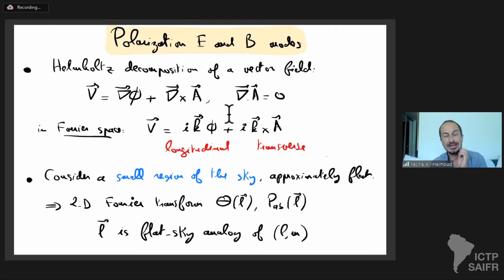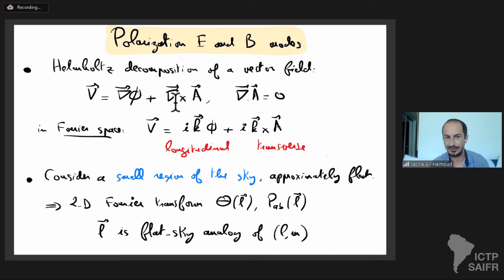I want to briefly talk about E and B modes — and beware that E here no longer means electric field. If you have a three-dimensional vector field, by Helmholtz decomposition you can write it as the gradient of a scalar field plus the curl of a divergence-free vector field A. In Fourier space, v equals ik times phi plus ik cross A — the first part is longitudinal (parallel to k) and the second is transverse (perpendicular to k), with two independent components.